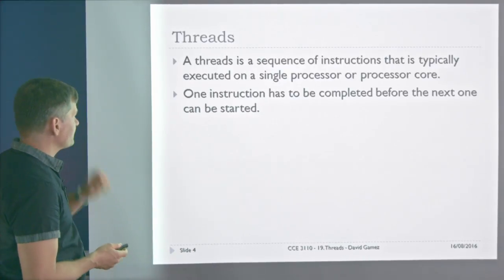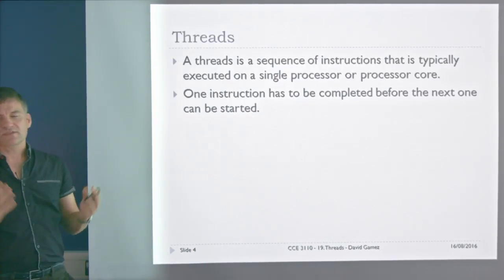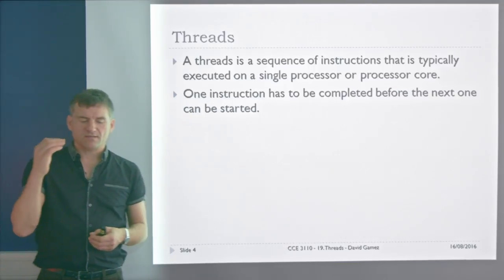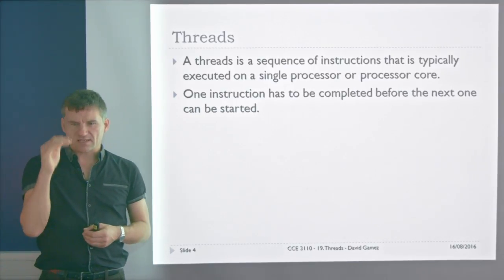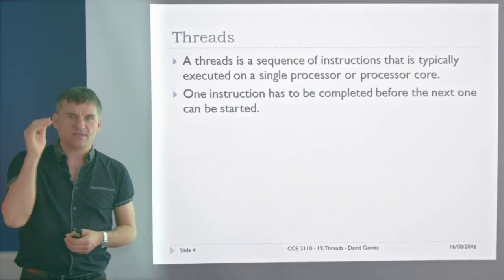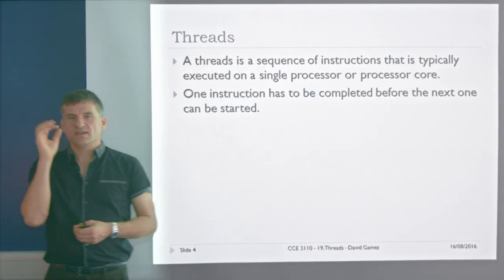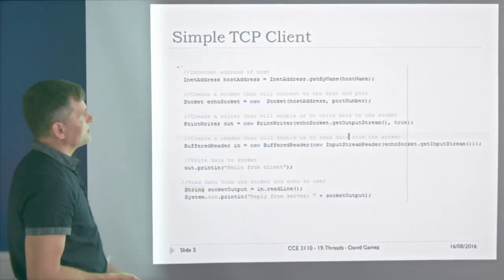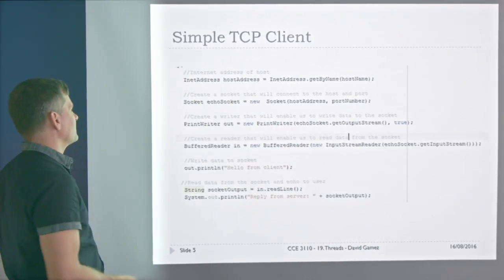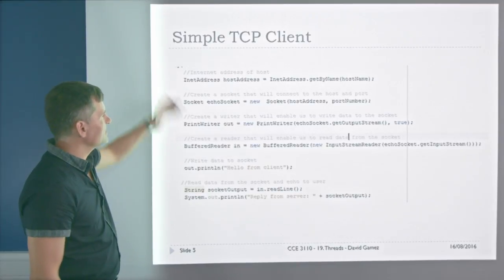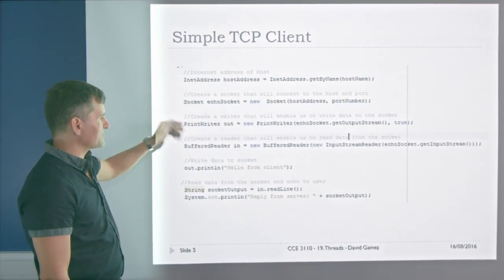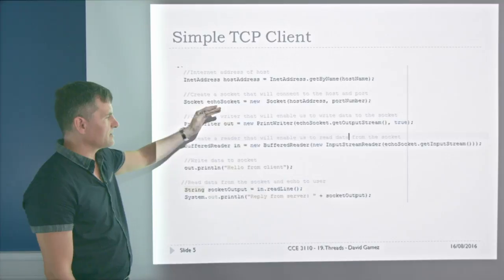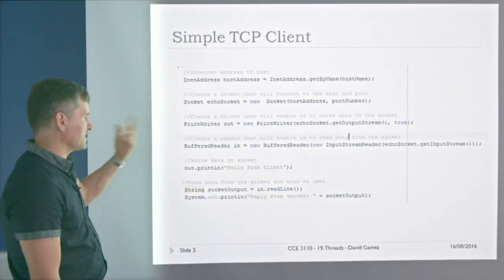Threads in Java. Threads are just a sequence of instructions executed on a single processor or processor core. In each thread there's a list of instructions, and the first instruction is executed first, then the second, then the third — in a determinate order. One instruction has to be completed before the next one can start. If there's a blocking method call at some point, the rest of the thread won't execute until that method call returns.